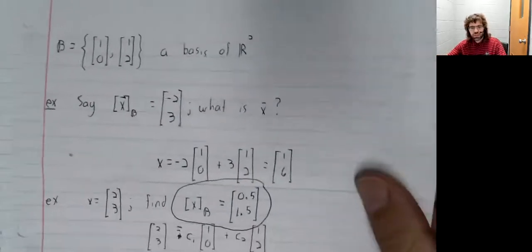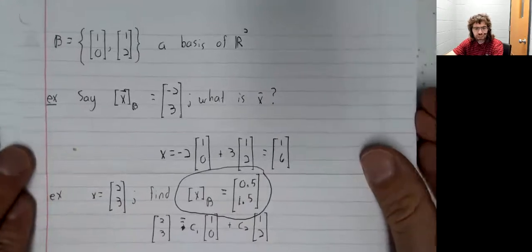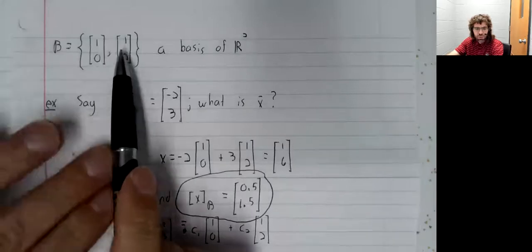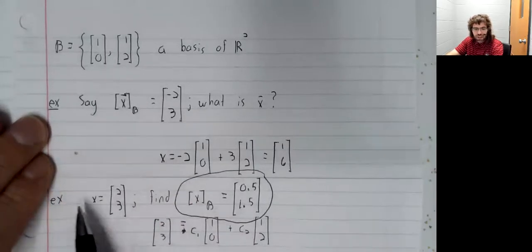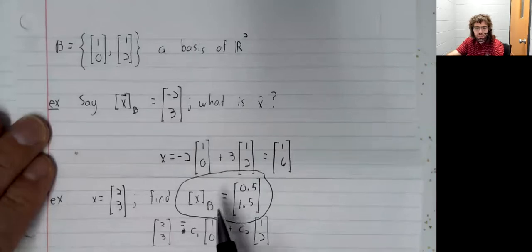Let's define something called the change of coordinate matrix. To motivate this, let's go back to an example we did in a previous video. We gave a basis of R2, we gave a vector x,